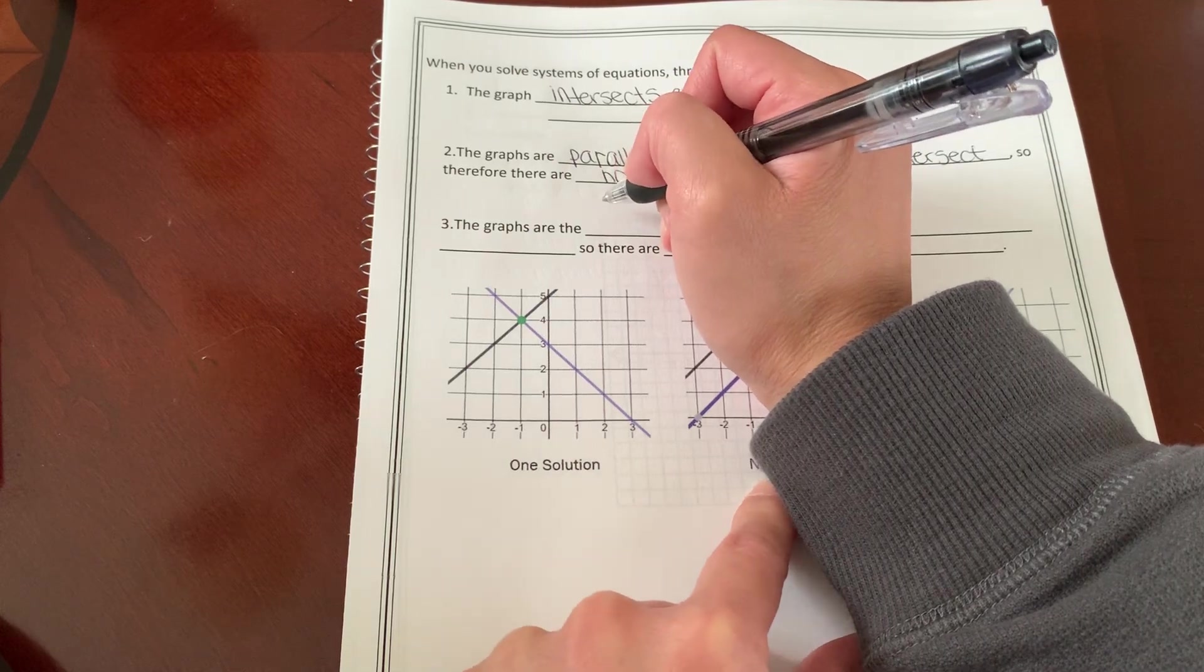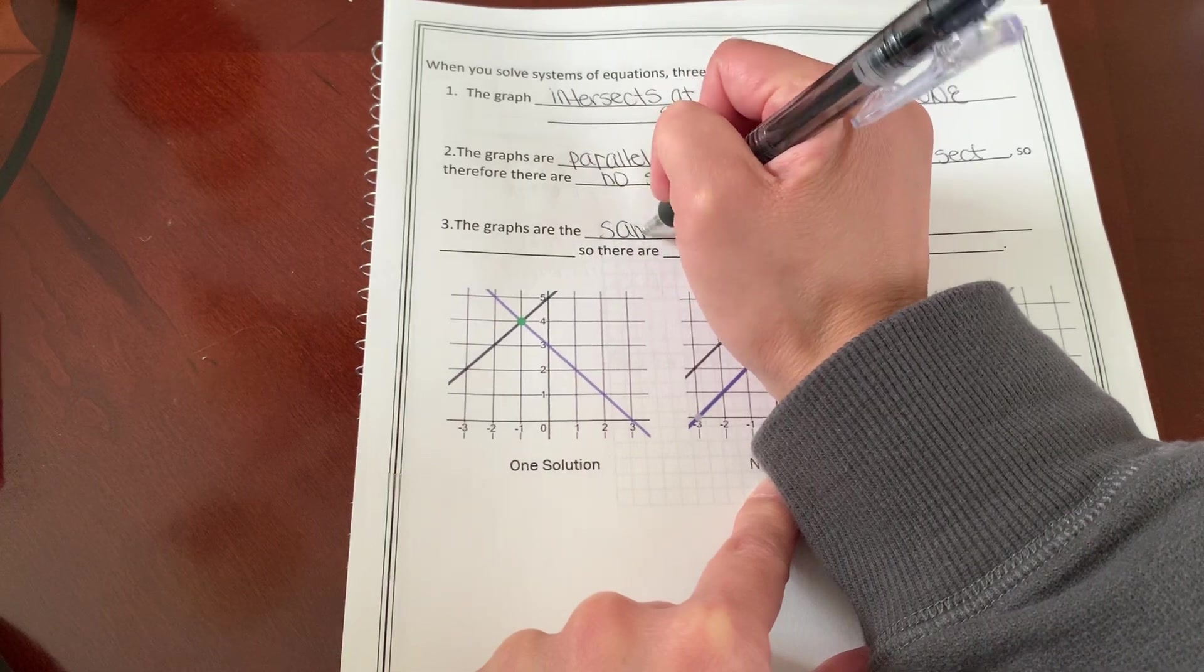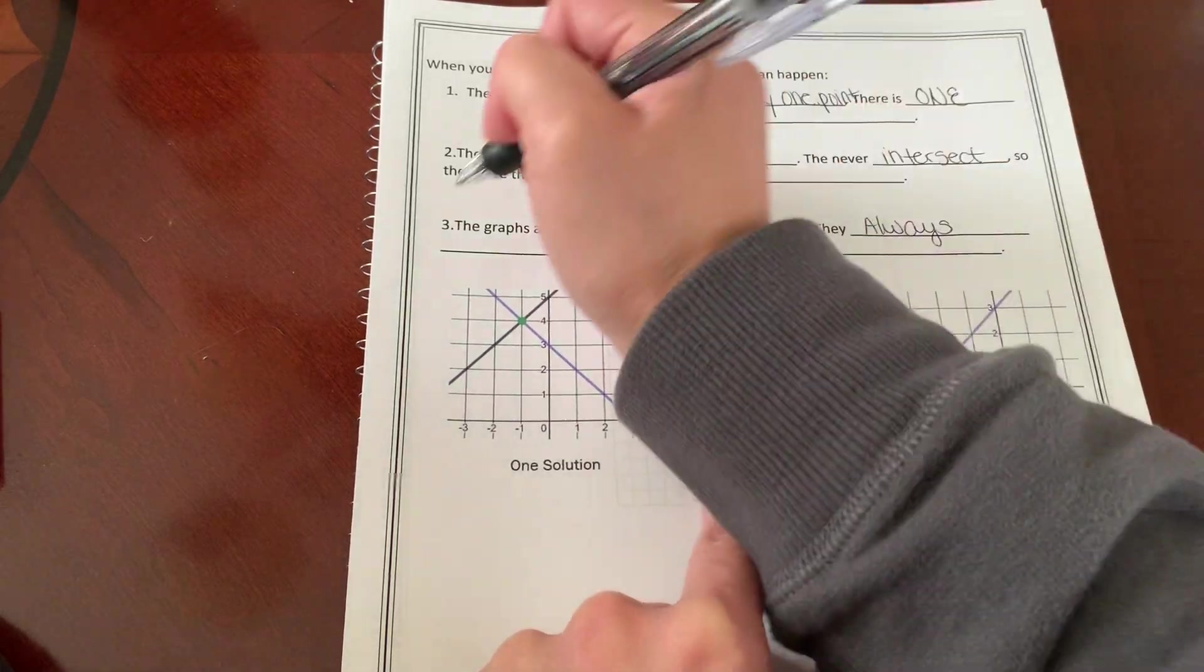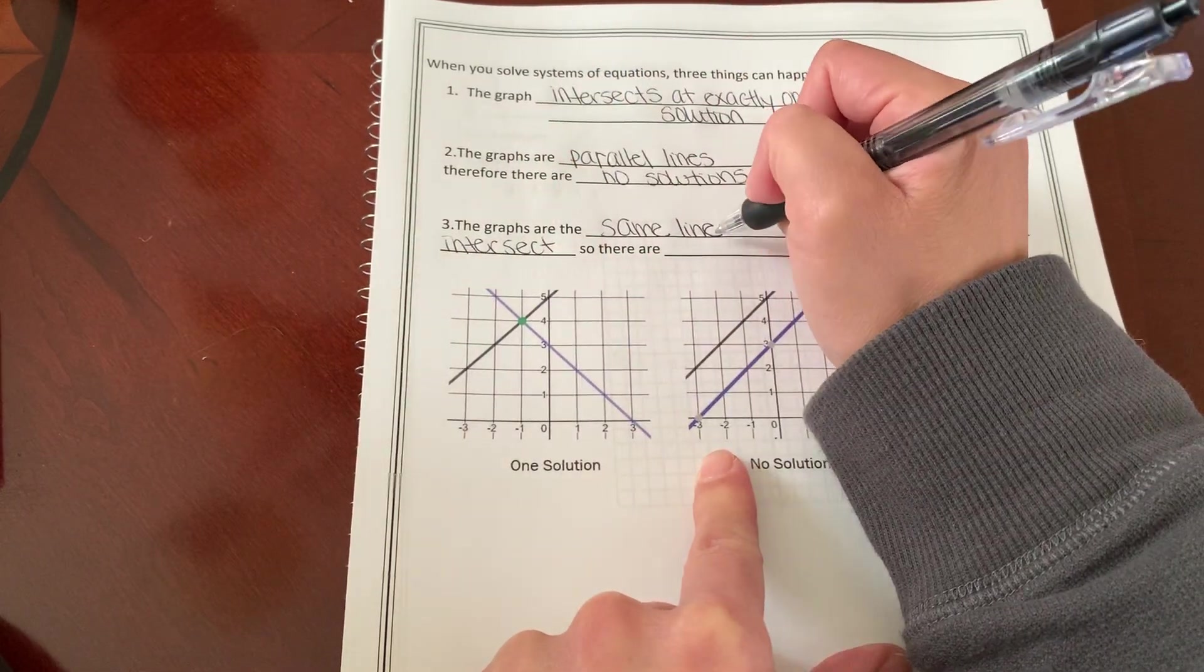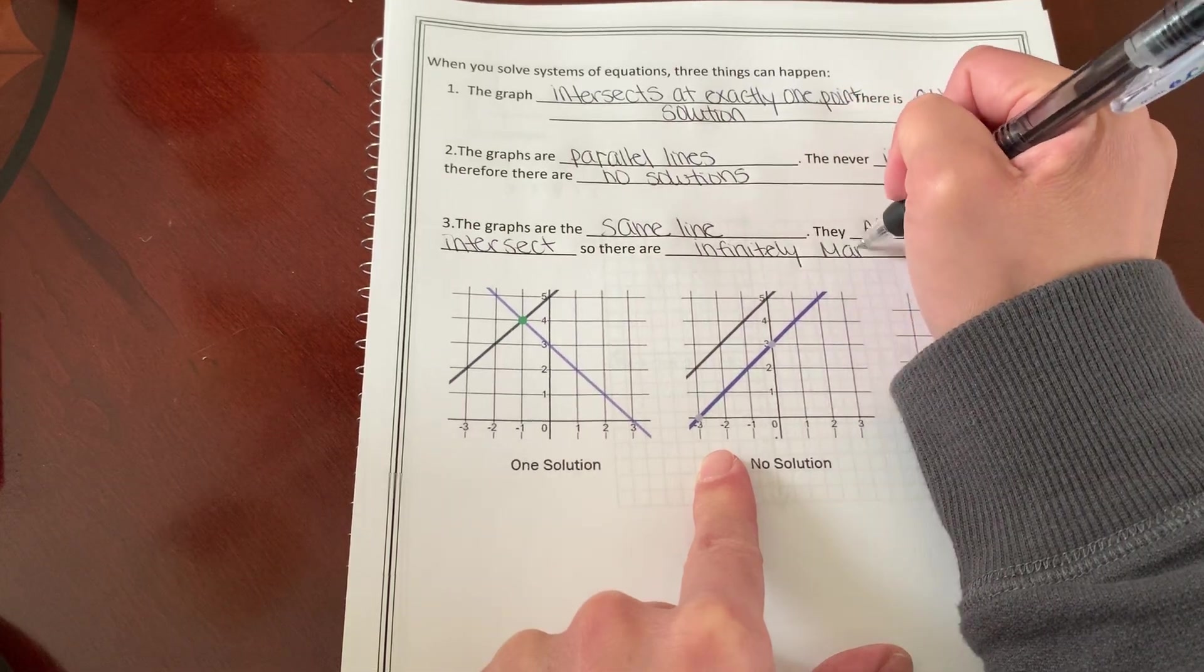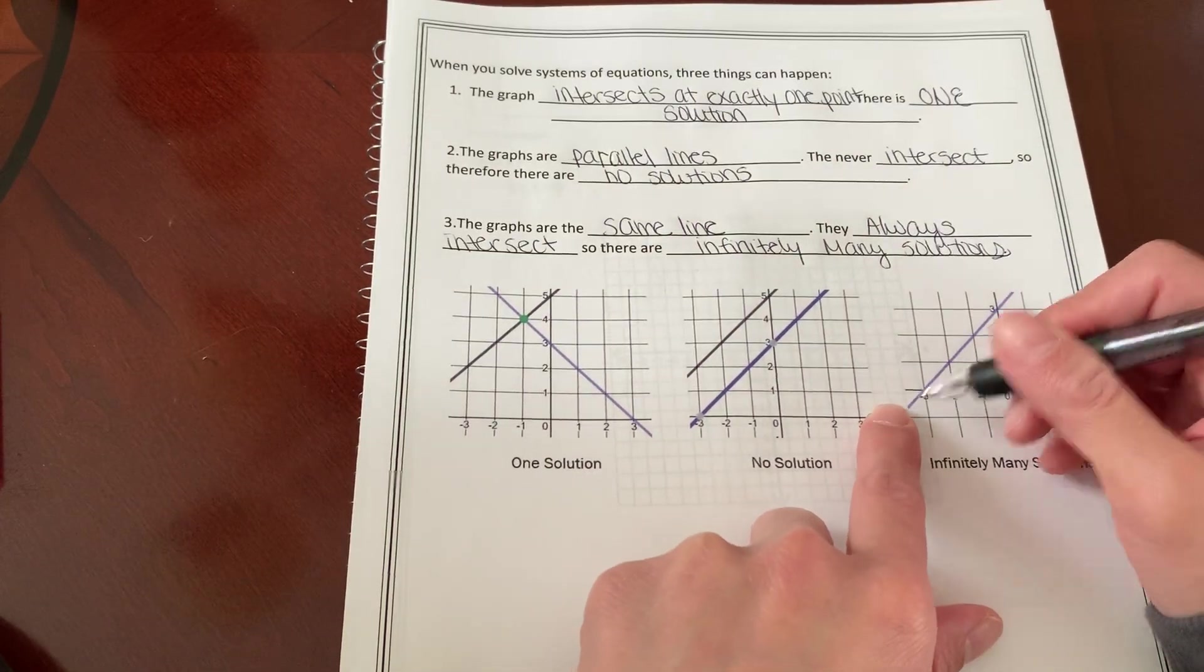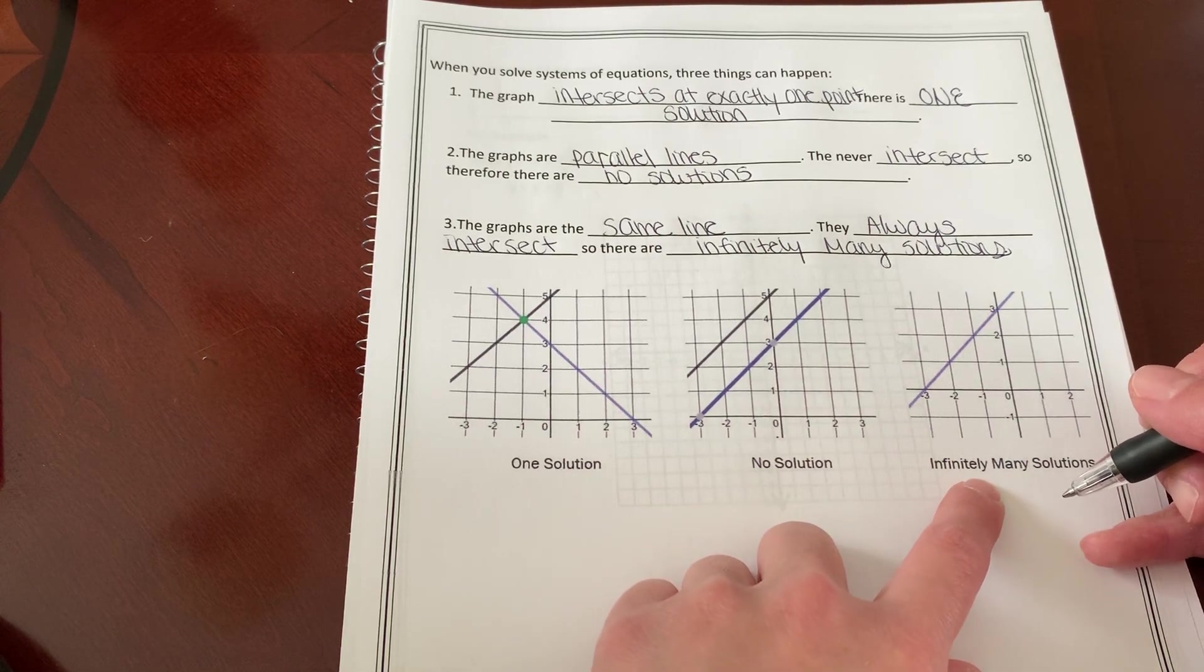The third thing that can happen is that the graphs are going to be the same line, which means they always intersect. So there are infinitely many solutions. So you can see here, there's actually two lines. It's going to be one on top of the other, but it just looks like one. So that means when that happens, you will have many solutions.